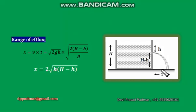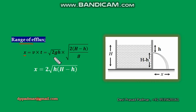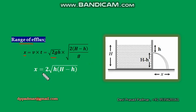The horizontal distance covered by the efflux is known as the range of efflux. Range is calculated as speed multiplied by time — velocity of efflux, which is root of 2gh, times the time root of 2(H minus h) divided by g. Simplifying, we get the range of efflux: x equals 2 times root of h into (H minus h).